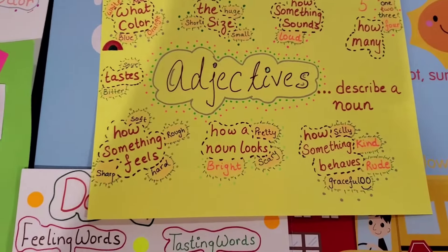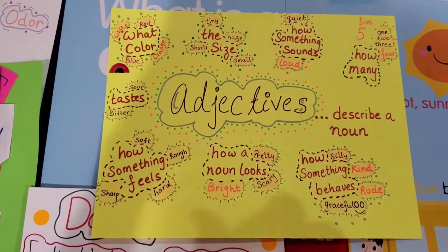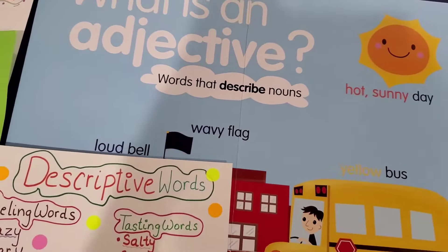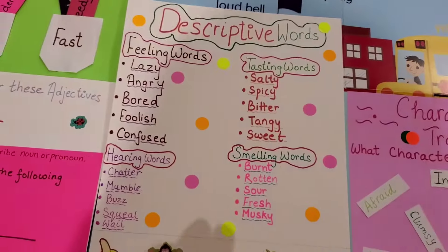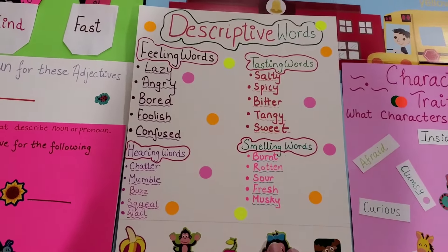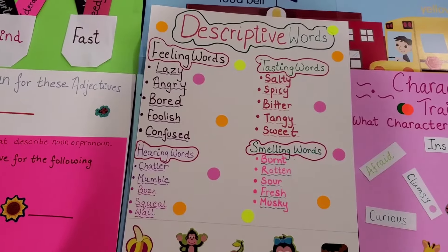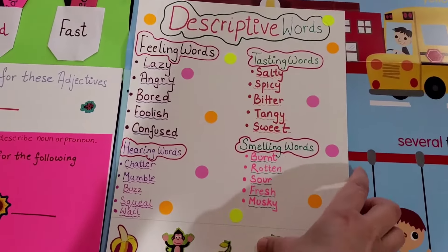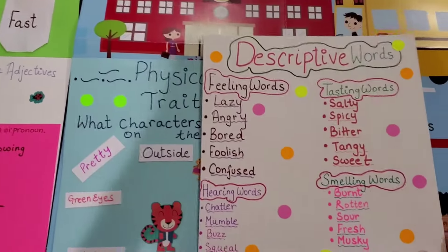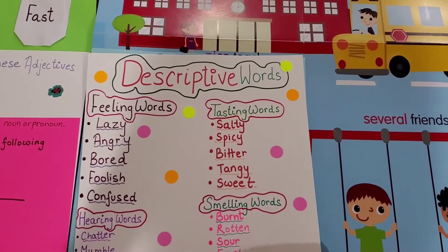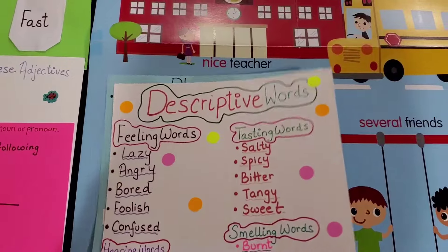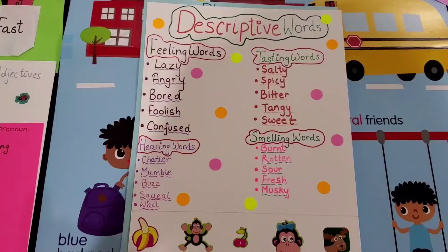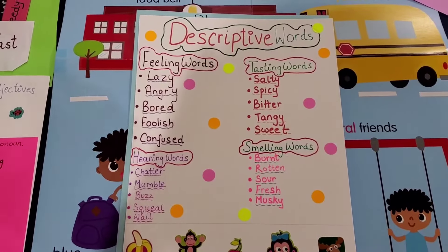To take it forward, there'll be a lot of activities. The first activity I've done for Vivan uses descriptive words — feeling words — for him to figure out. I'll show you exactly how we convert it into an activity. It says 'feeling words': lazy, angry, bored, foolish, confused. Then you have hearing words, smelling words, and tasting words.